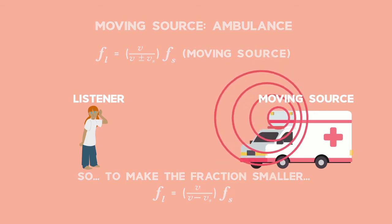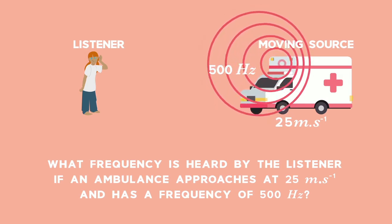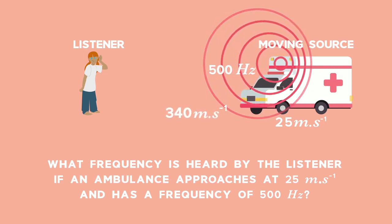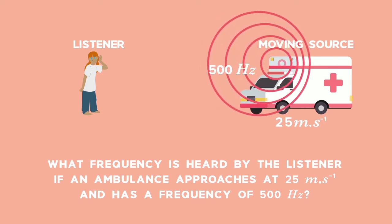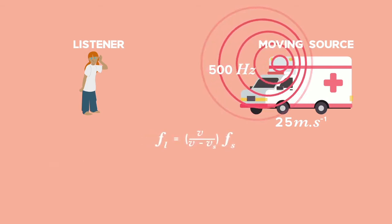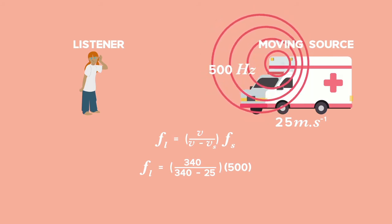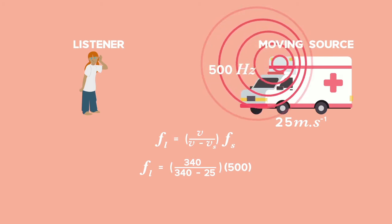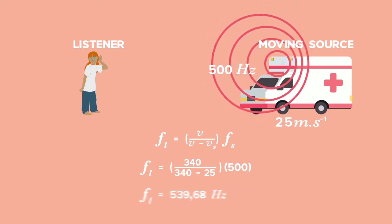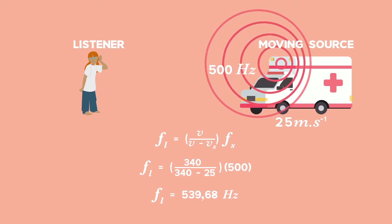Let's put some numbers into this. The ambulance in the picture is making a 500 Hz noise while travelling at 25 m/s towards the listener. The speed of sound in this example is 340 m/s. We substitute the velocity of the waves into both positions — on top and bottom — and subtract the velocity of the ambulance. This makes the fraction bigger, and when multiplied by the source frequency of 500 Hz, an observer would hear the siren at about 539.68 Hz. The listener frequency is larger than the source frequency, just as we predicted.